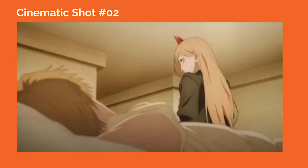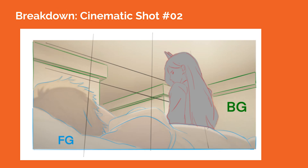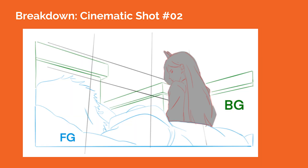In cinematic shot number two, the camera is placed low and pointing upward with the back of Denji's head and his body in the foreground, slightly blurred out to add a sense of spatial depth. The focus of the shot is on Power, who is on screen right, and she is sitting next to Denji. We see the ceiling in this up shot and the background perspective cues help us to see the three-point perspective grid.